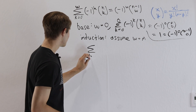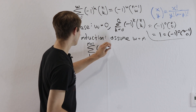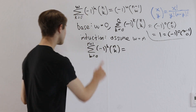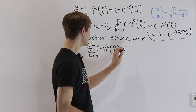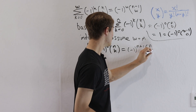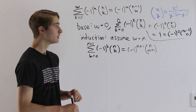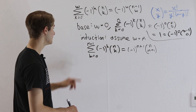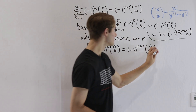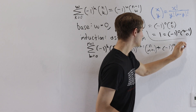So we take the sum from k equals 0 to m plus 1 of negative 1 to the k times n choose k. We're going to split up the sum into two parts — first, taking out the m plus 1 term separately: negative 1 to the m plus 1 times n choose m plus 1. Then we have the rest of the sum from k equals 0 to m. We know this identity is true for w equals m, so that sum equals negative 1 to the m times n minus 1 choose m. And that is the beauty of induction — we can already plug this in.